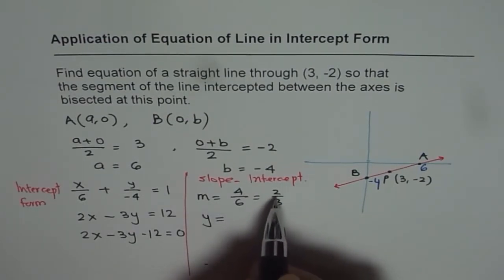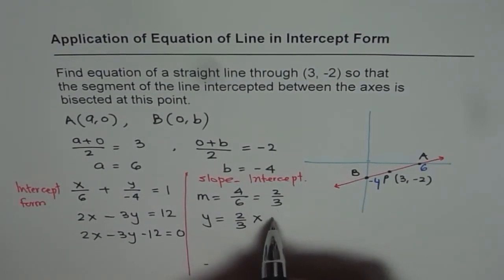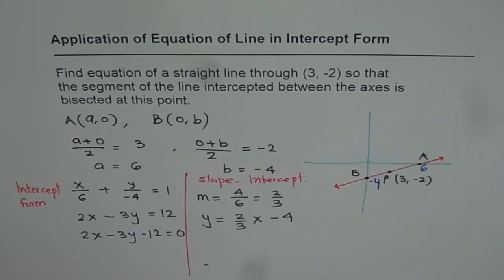Which is y equals to mx plus b. m is slope 2 over 3, x plus b, y-intercept -4. So that is slope intercept form.